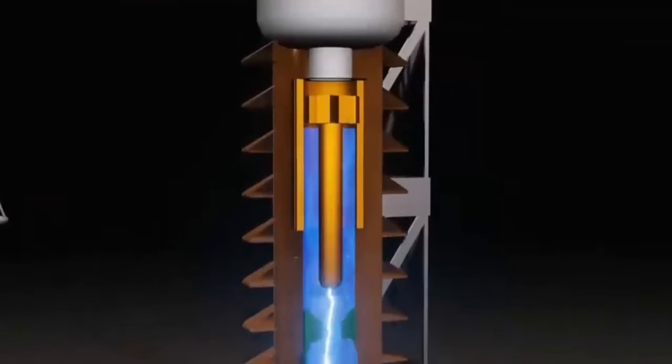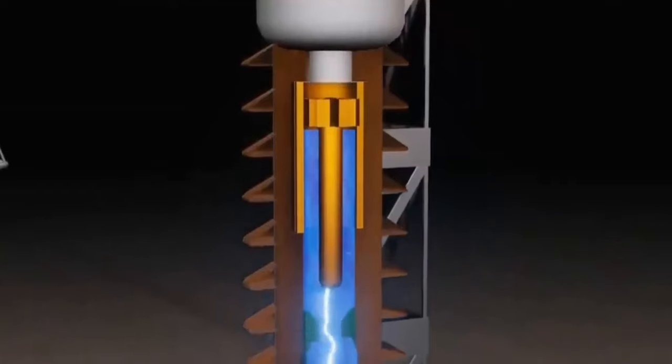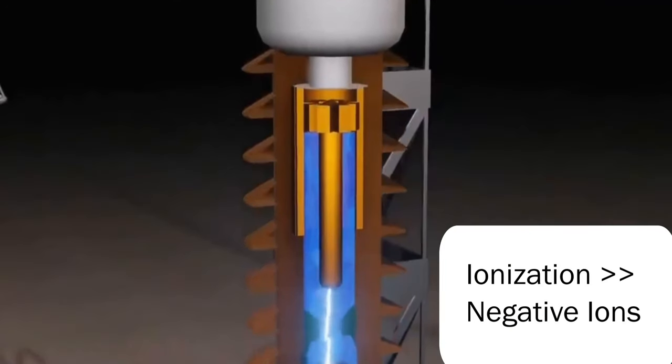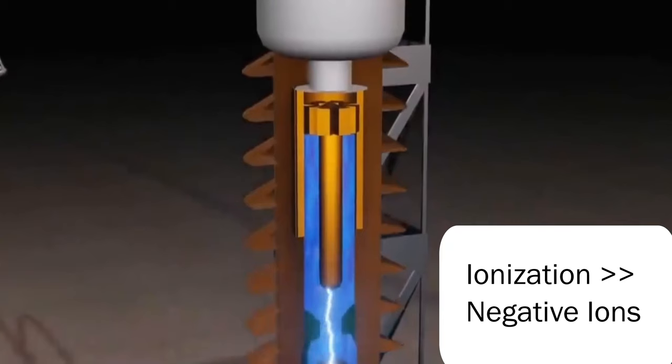Sulfur hexafluoride is able to extinguish the arc because high temperatures cause it to ionize into negative ions, which prevent free electrons from moving and thus eliminate the arc.